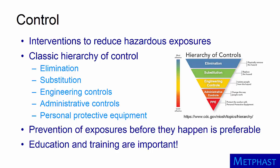Engineering controls try to separate people from the hazard or the hazard from people. Examples include enclosures around processes, control booths, local exhaust ventilation, laboratory hoods, and air pollution control equipment.